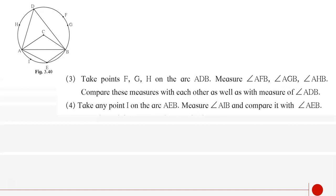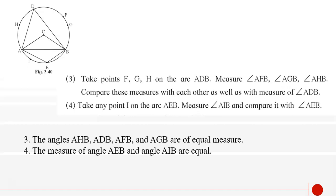Take any point I on the arc AEB. Measure angle AIB and compare it with angle AEB. For the third activity you will find that all the angles AHB, ADB, AFB and AGB are of equal measure. And for the fourth one, you will find the measure of angle AEB and angle AIB are equal.